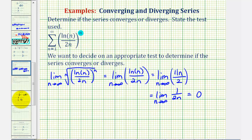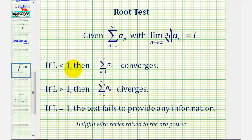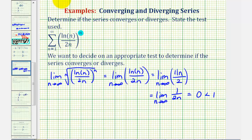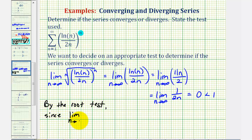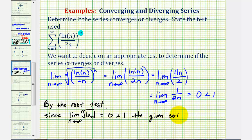Going back to the root test, since L equals zero and zero is less than one, by the root test — since the limit as n approaches infinity of the nth root of the absolute value of a sub n equals zero, which is less than one — the given series, the summation from n equals one to infinity of natural log n divided by 2n raised to the nth power, converges.